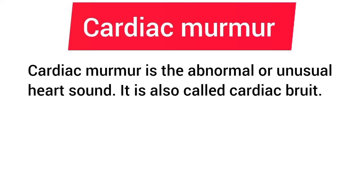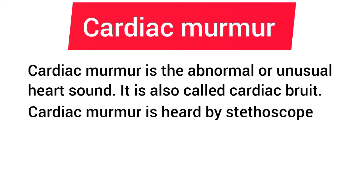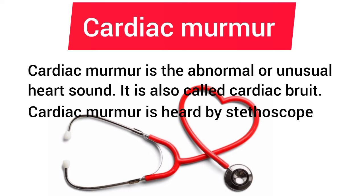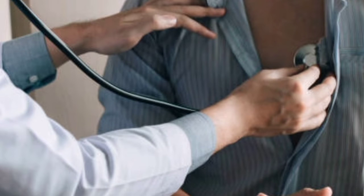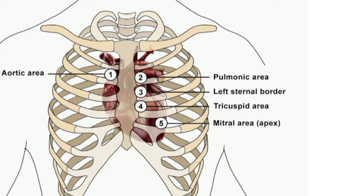Cardiac murmur is an abnormal or unusual heart sound, also called abnormal heart sound or cardiac bruit. It is heard by a stethoscope along with normal heart sounds, by placing the chest piece of the stethoscope over the auscultatory areas. The murmur due to disease of a particular valve is heard well over the auscultatory area of that valve. Sometimes the murmur is felt by palpation as thrills.